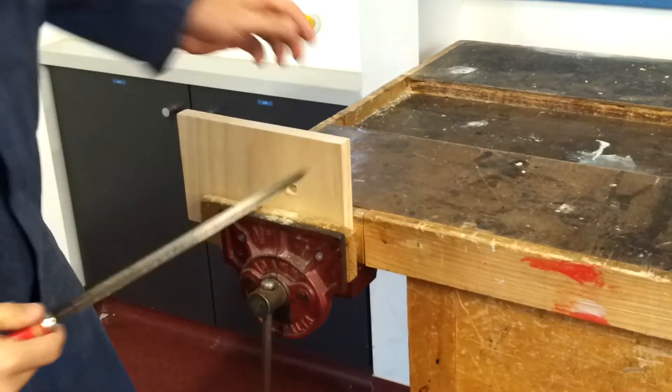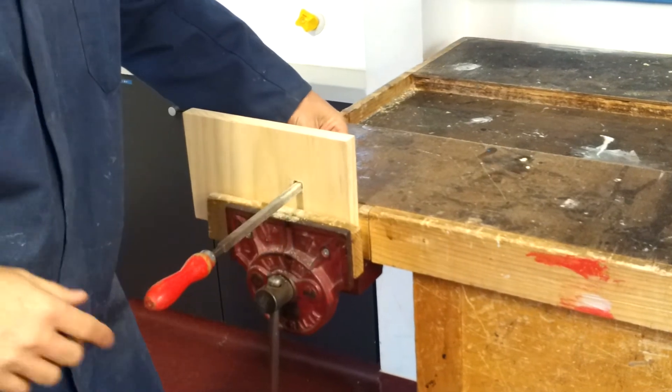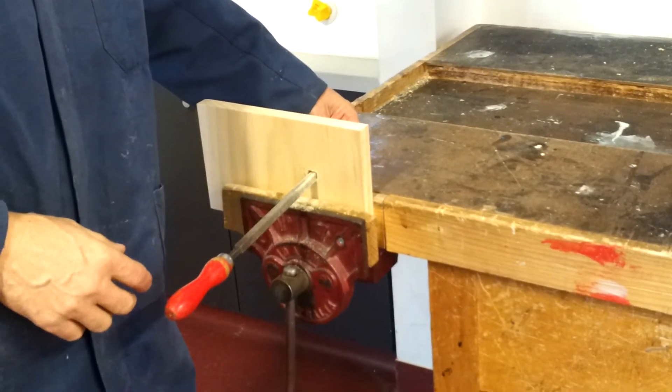So all I'm going to do is use my square file and keep filing until I make that a nice big square hole. Okay, which you will see when you come back for the next step. Thank you.